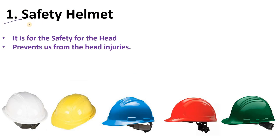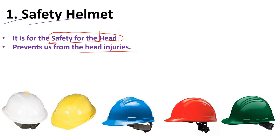Let's see the types of PPEs which we must wear in the plant. The first one is the safety helmet. Its function is for the safety of the head — it will provide safety of the head and prevent us from head injuries. As in the example I gave, it gives us safety for our head. There is white, yellow, blue, red, and green helmet, and it depends on your industry which type of helmet is worn.